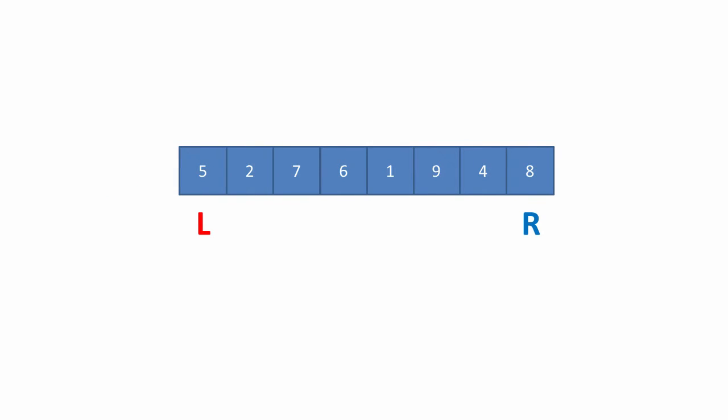In this alternative method we still have a left and a right pointer, but we are not explicitly nominating a pivot value. The principle is to compare items at the pointers and, if necessary, swap them, so that the smaller of the two items is at the left pointer and the larger of the two is at the right pointer.